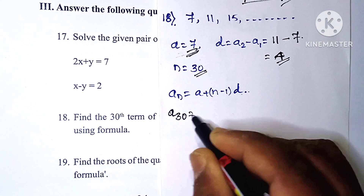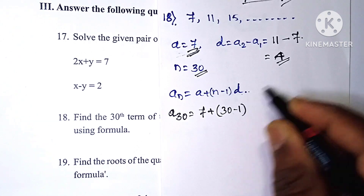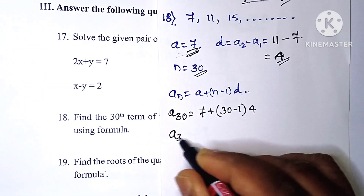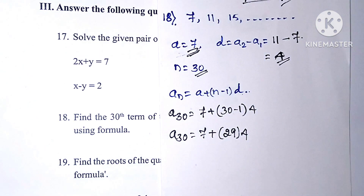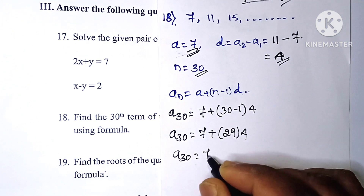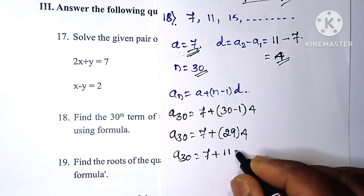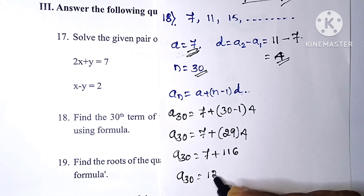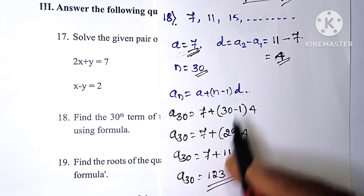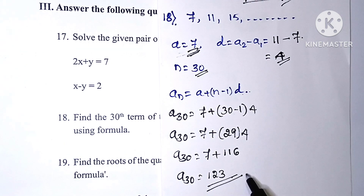a30 is equal to a plus 30 minus 1 into d, which is equal to 7 plus 29 into 4. So the answer is 123.